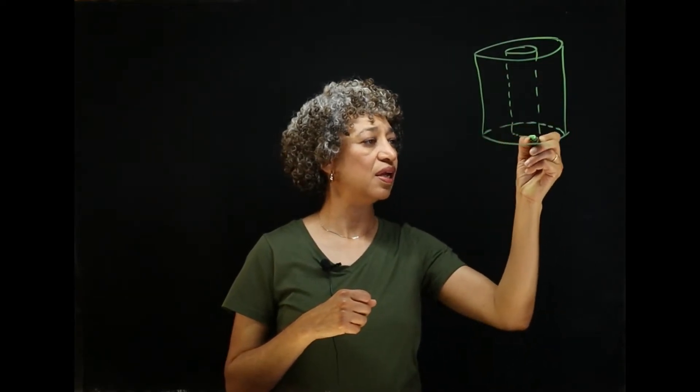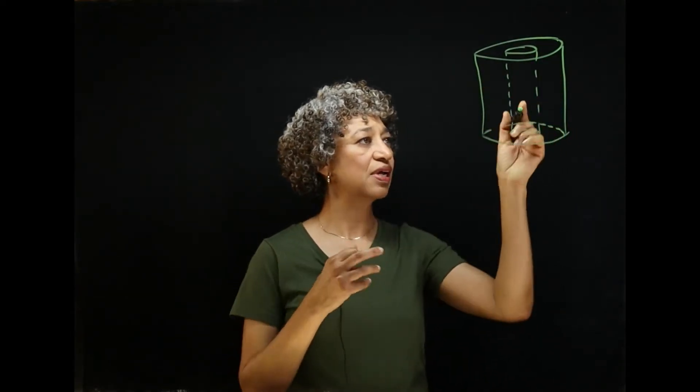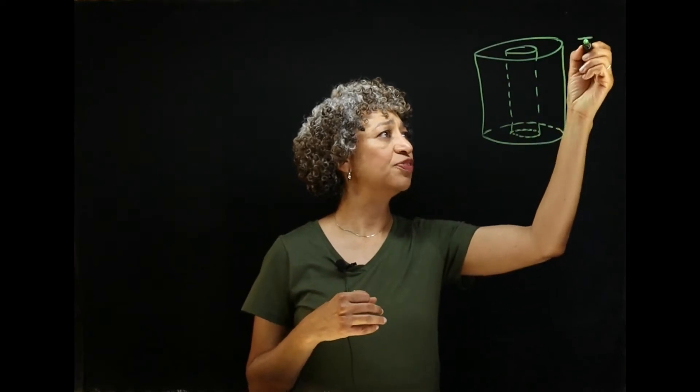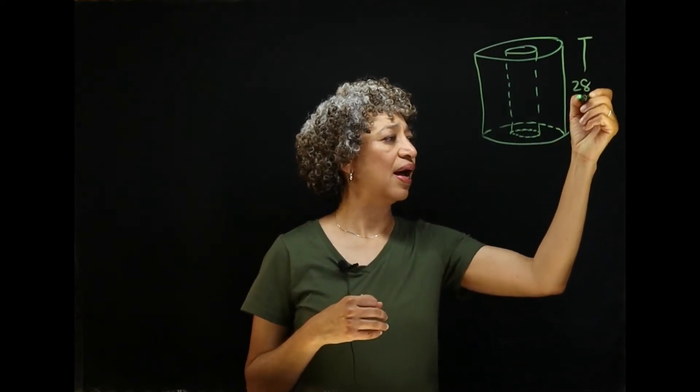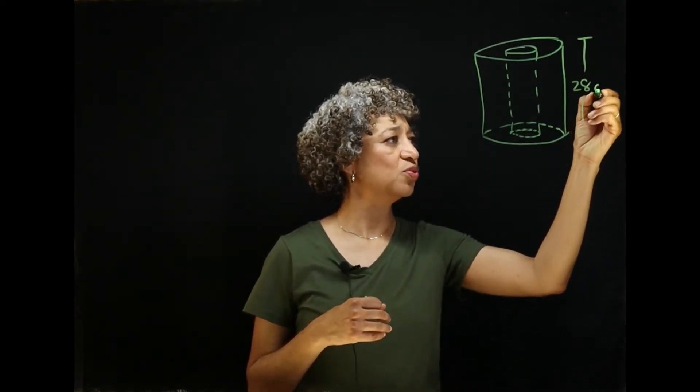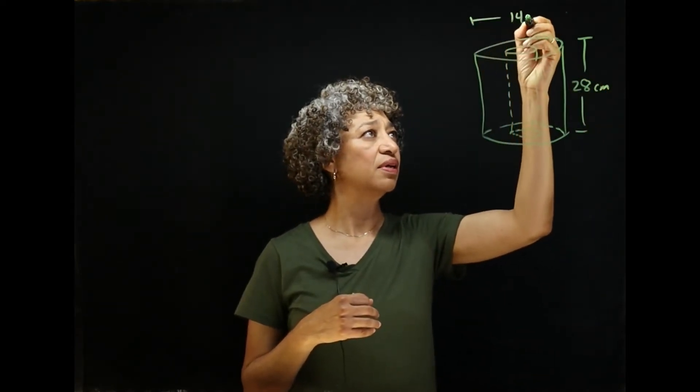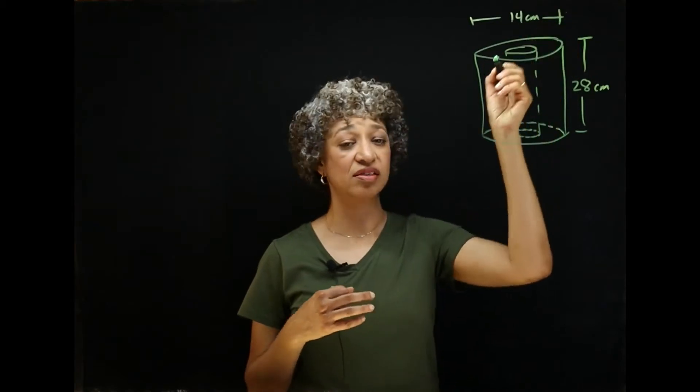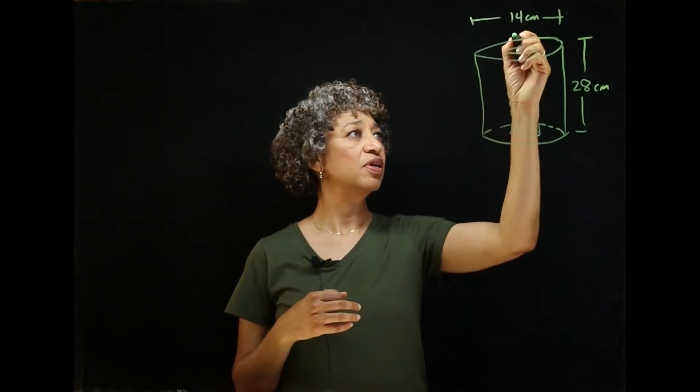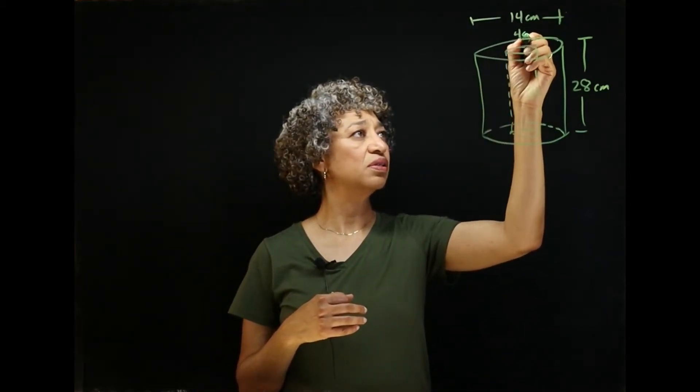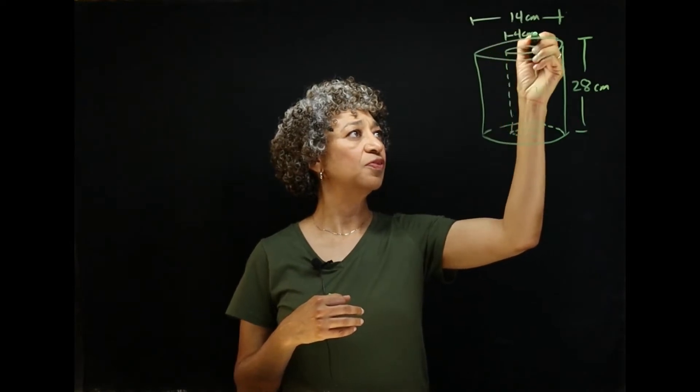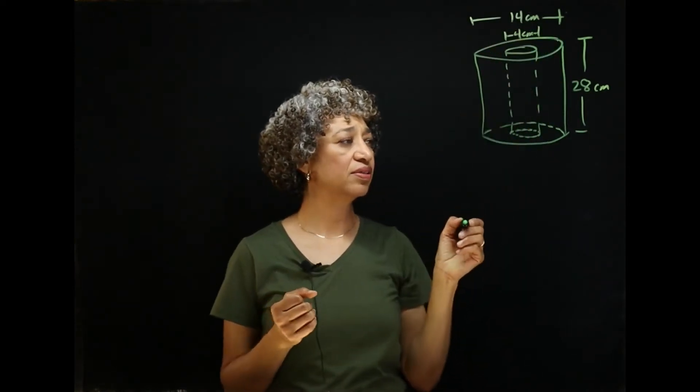So we've got that inner tube inside of an outer tube, and I've measured it for you. The height of the roll of paper towels is 28 centimeters. The outer diameter is 14 centimeters, and the diameter of this smaller circle is 4 centimeters.